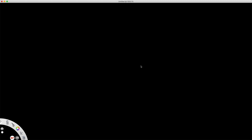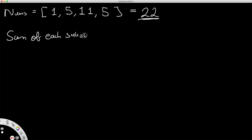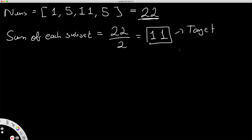Let's use the specific example from the problem: nums = [1, 5, 11, 5]. The sum of nums is 5+5+1+11 = 22. So the sum of each subset should be 22 divided by 2, which is 11. We can think of 11 as the target value that each subset's sum must reach.